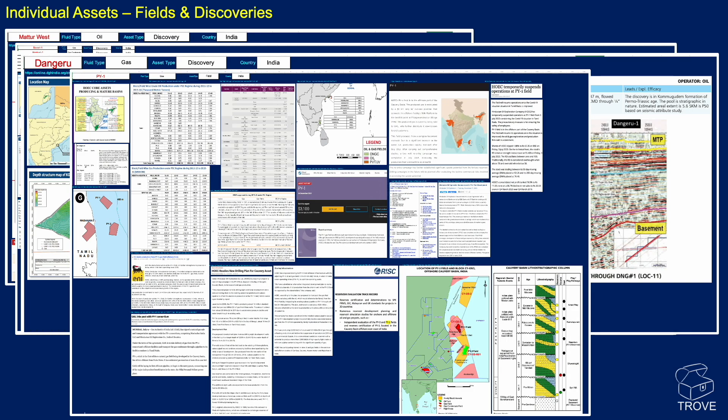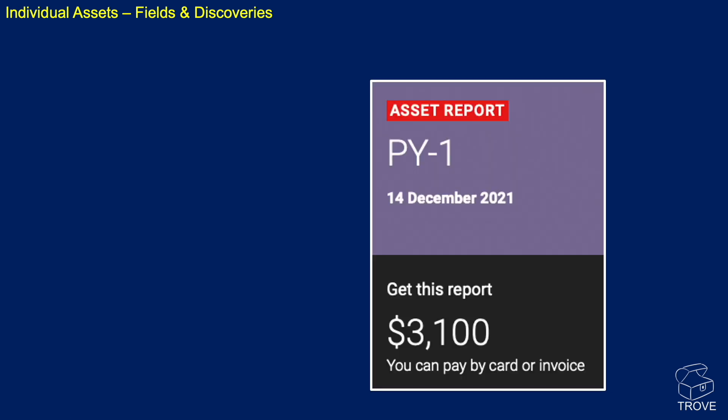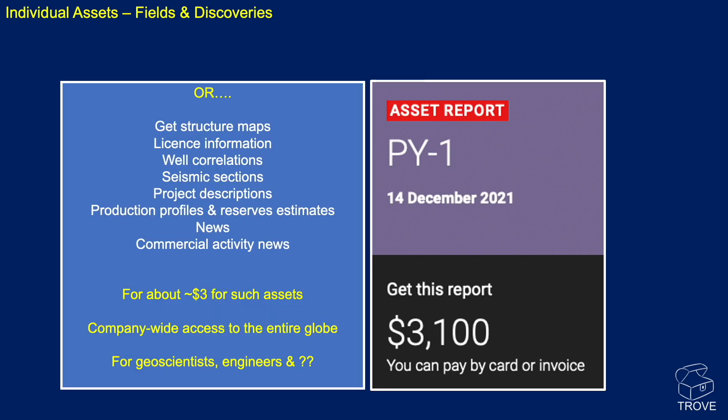And here's one final example: PY1. You can see all the information we have in Trove. One of the other companies would charge you quite a lot of money just to get an asset report on this single asset. Whereas with Trove, you get structure maps, license information, well correlations, and seismic sections — all the other data in that listing — for about $3 an asset.